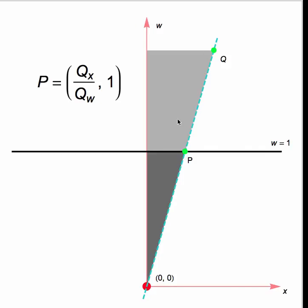So that means the homogeneous coordinates of P, because we're still thinking of P as being in this homogeneous space, is QX over QW, and then 1. Now, you're not going to be making too many one-dimensional Bézier curves, so let's move on to two dimensions.